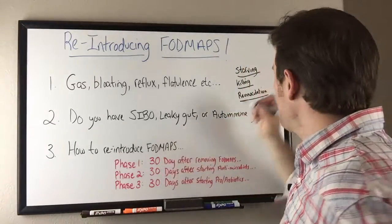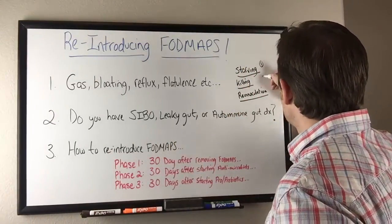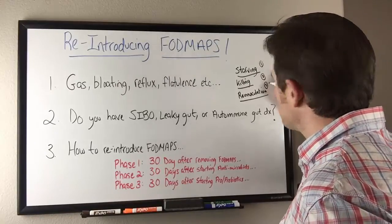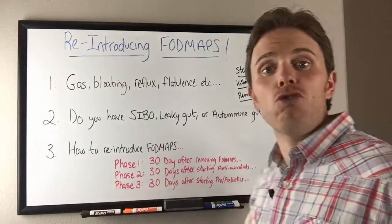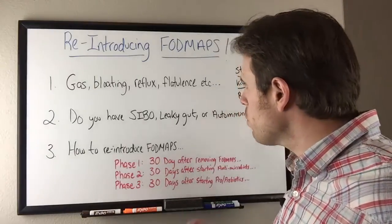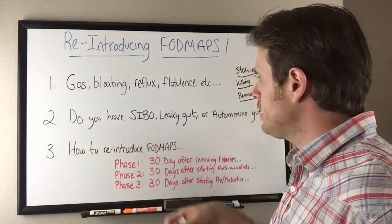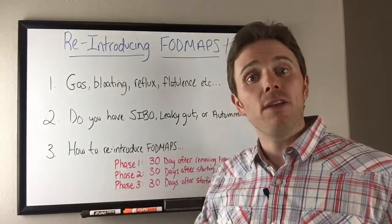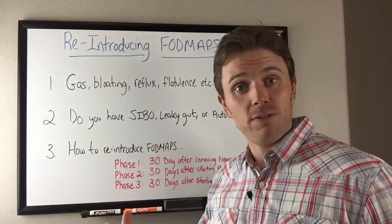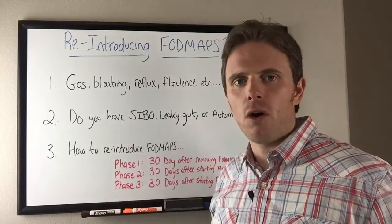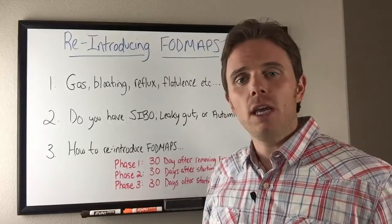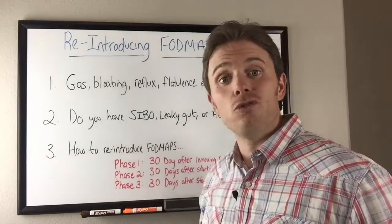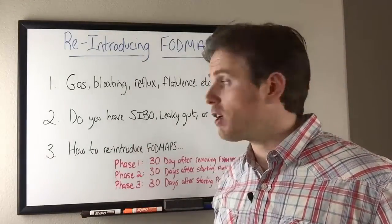There are three different things we're trying to do: starving, killing, and re-inoculation. Phases one, two, and three are good times to start reintroducing FODMAPs. First things first — do you have SIBO, leaky gut, or autoimmune gut disease? More than likely you may benefit by cutting out FODMAPs for a period of time, and definitely cutting out grains, legumes, dairy, and all refined sugar.